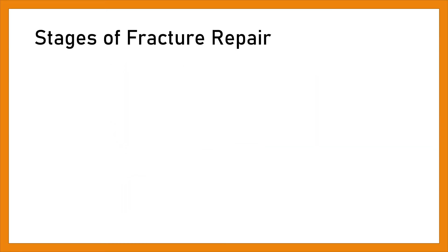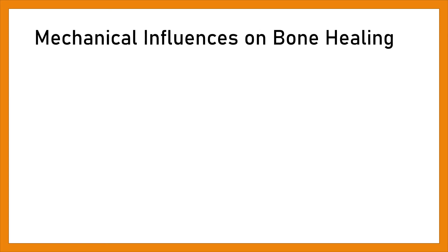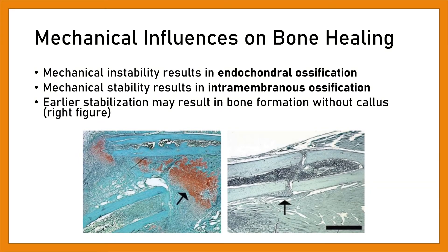The overlapping stages of fracture repair: Fracture healing cannot be separated into discrete phases of cellular activity, but should be viewed as a continuum. Although at any one time one phase may dominate, all processes occur simultaneously early in fracture healing. Remodeling continues for up to 6 years after initial injury depending on treatment modality. Mechanical instability results in endochondral ossification, while mechanical stability results in intramembranous ossification. Earlier stabilization may result in bone formation without callus.